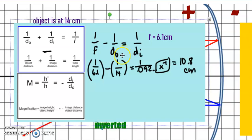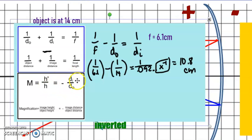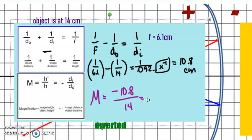There's another thing you can calculate: the magnification. The magnification formula uses height information — if the image height is greater than the object height, the magnification is greater than one. We don't have the height in our problem, but we do have the distance of the object and the distance of the image, so we can calculate it. m equals negative di over do, so that's negative 10.8 centimeters over 14 centimeters, giving us negative 0.77.